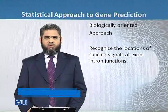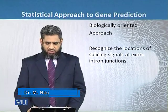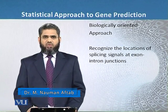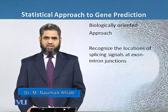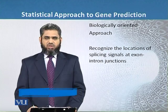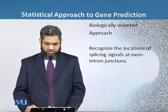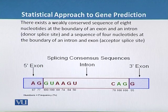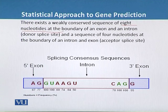Many researchers have used the biologically oriented approach to find the location of the splice signals in the intron-exon junctions. We can see here there exists a weakly conserved sequence of eight nucleotides at the boundary of the exon and introns.